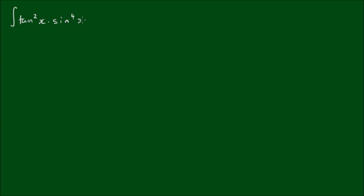In this video let's have a look at the indefinite integral, or the antiderivative, of tan squared of x by sine to the fourth power of x dx. One way to tackle this problem is with trigonometric identities. For these even powers, it appears to me that the most efficient approach is with trigonometric identities, but if you think of any more efficient approaches, please comment in the comment section below.